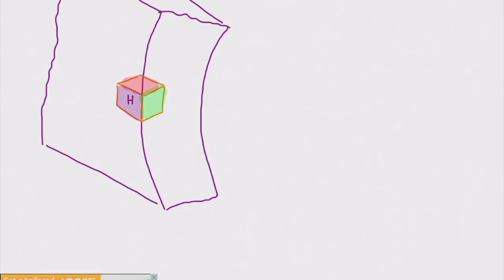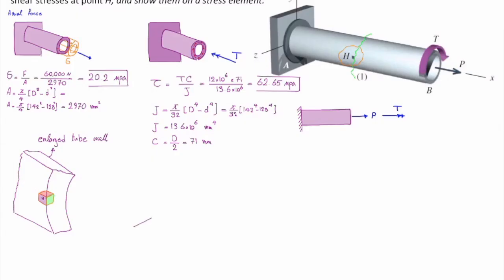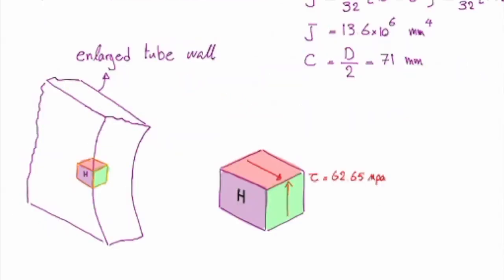In this case the stress goes upward because of the direction of torque. If I take out that element, there would be shear stress acting on the green surface, and there would be shear stress acting on the red surface as well. We have determined the value of shear stress before - the value is 62.65.